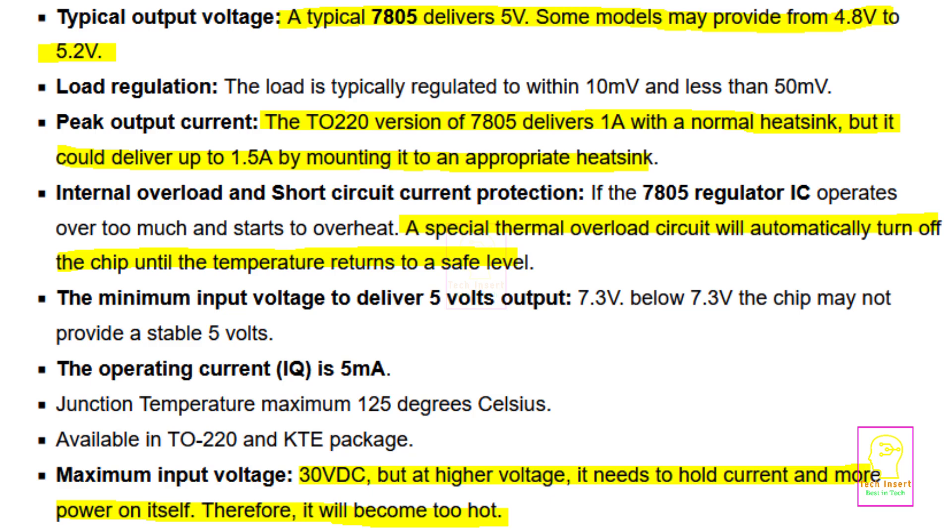A 7805 will deliver 5 volt regulated output, but in some models the output may vary from 4.8 volt to 5.2 volt. That means 7805 is made by different manufacturers, and the output will vary with respect to the manufacturers. The second point is 7805 can deliver one ampere to the load with a normal heatsink.